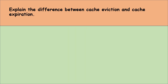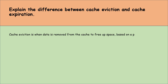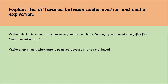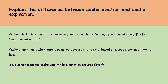Let's move to the next question: explain the difference between cache eviction and cache expiration. Cache eviction is when data is removed from the cache to free up space based on a policy like Least Recently Used (LRU). Cache expiration is when data is removed because it's too old, based on a predetermined time-to-live (TTL). So eviction manages cache size while expiration ensures data freshness.